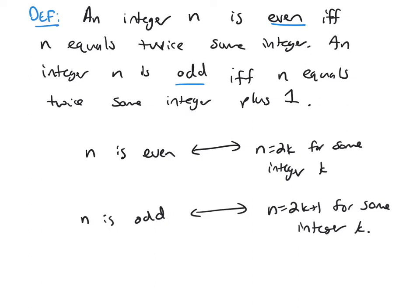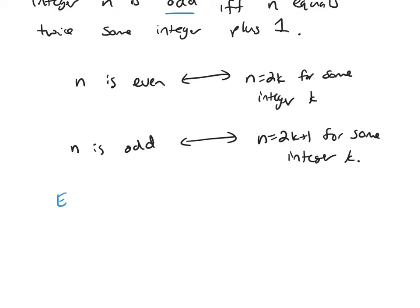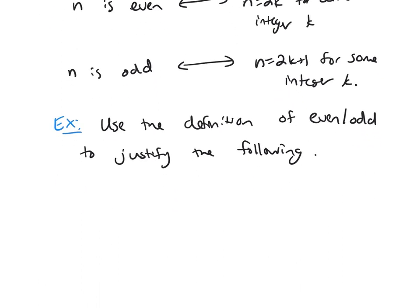So those are the definitions of even and odd. Now let's look at an example. Use the definition of even/odd to justify the following. So I'll ask first, is 0 even? The answer is yes, 0 is even, and the justification for that is if 0 is even, then it needs to be written as 2 times an integer. So 0 equals 2 times 0.